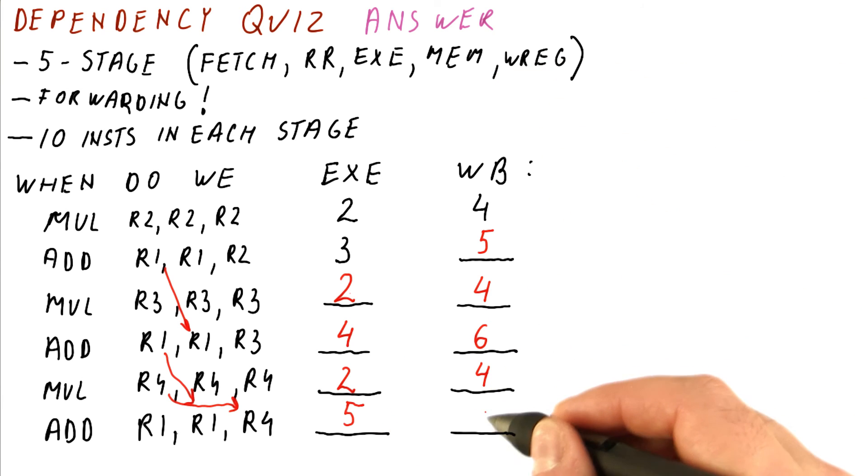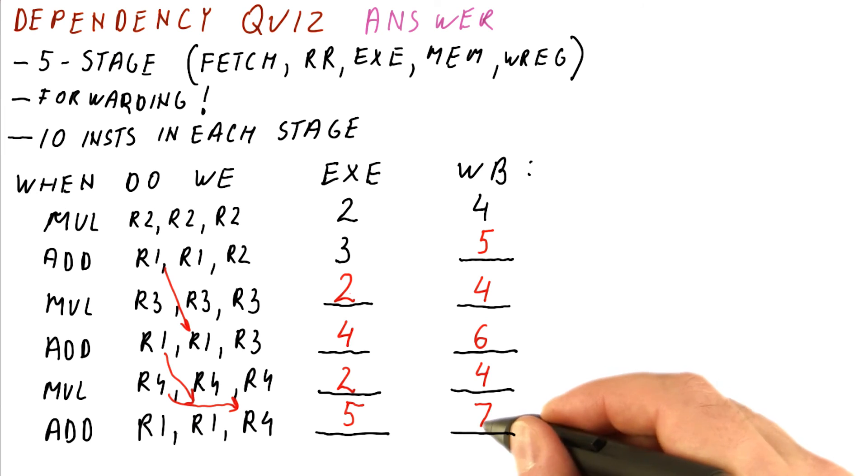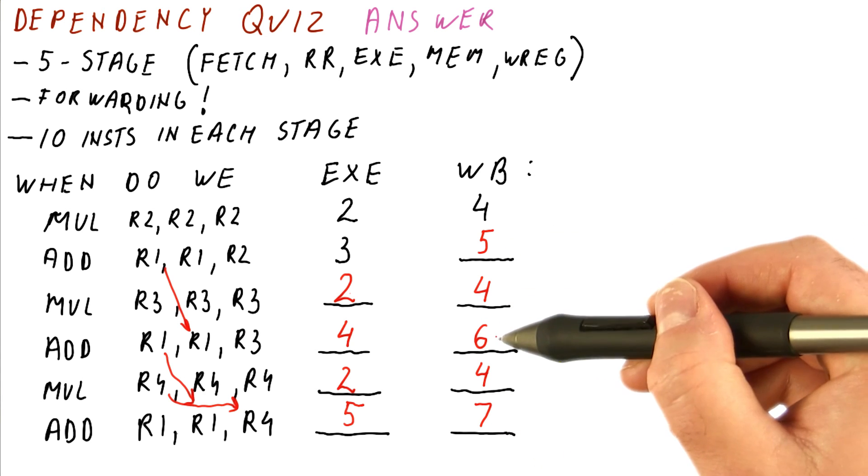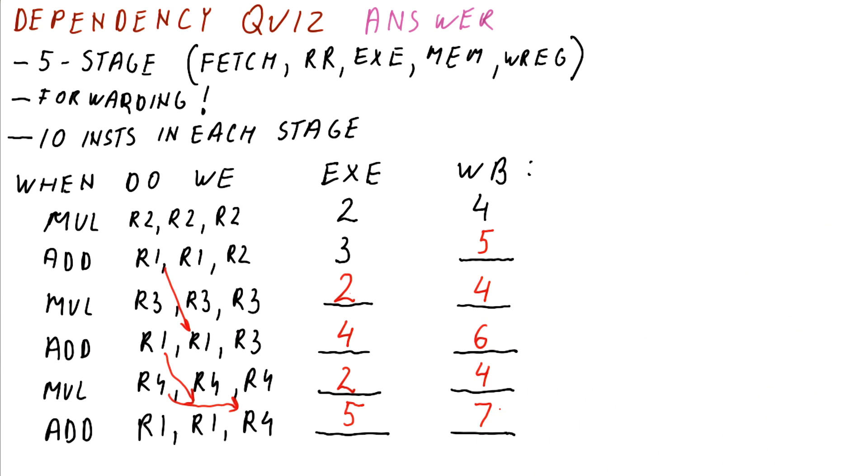Then the MEM, and we can write the result in cycle seven. But we have to check, is somebody else going to overwrite it later? And that's not going to happen because if we write here in cycle seven, we are safe. This is the latest instruction. It should do the write of the R1 at the latest time among all the other instructions. And if you look at the previous instructions, they have written the results in cycle five and cycle six. So it's okay if we here write it in cycle seven. So this is the solution to the quiz.